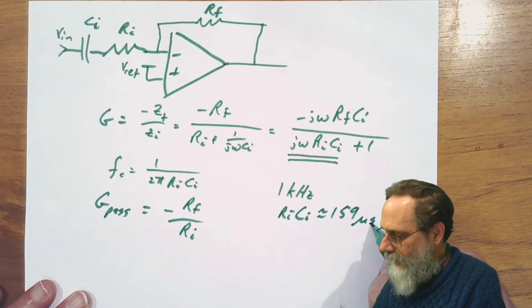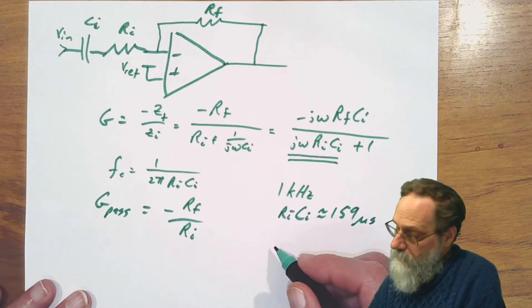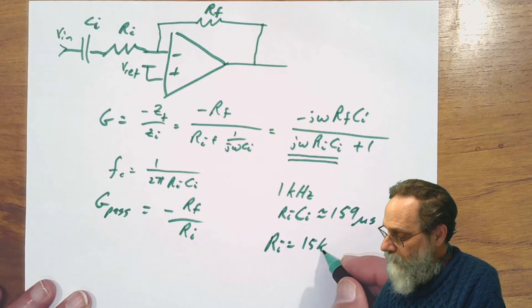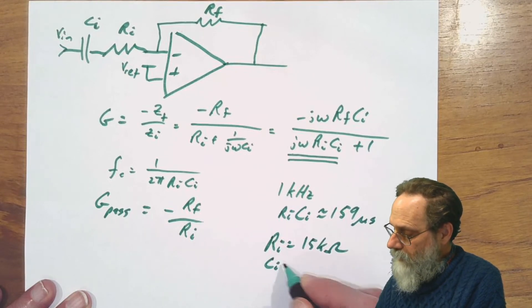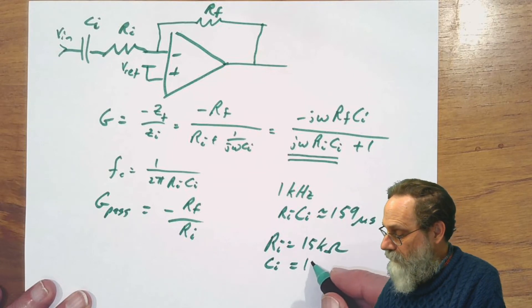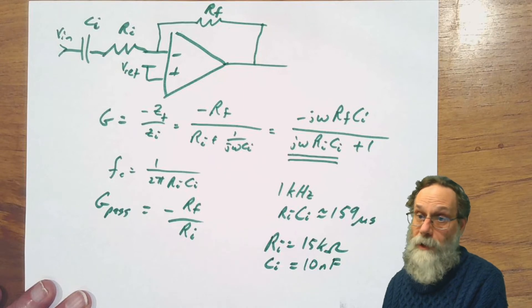Let's pick RI equals 15 kiloohms. And CI would then have to be about 10 nanofarads to get coming out to maybe 150 microseconds rather than 160.